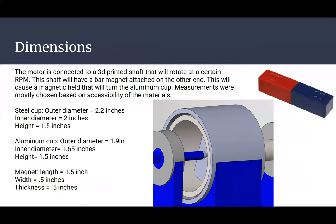As for the dimensions of our cups and magnets, our motor will connect to a 3D printed shaft that will rotate at a certain RPM. This shaft will have a bar magnet attached on the other end and the bar magnet will cause a magnetic field that will turn the aluminum cup. The measurements were mostly chosen based on the accessibility of the materials. For our steel cup, we have an outer diameter of 2.2 inches, an inner diameter of 2 inches, and a height of 1.5 inches. The aluminum cup, since it will go inside the steel cup, will need to be a little bit smaller. Our outer diameter is 1.9 inches, the inner is 1.65, and our height is 1.5 inches. And the magnet will go inside the aluminum cup, so the length of it will be shorter in order to fit into the aluminum cup. So it'll be 1.5 inches with a width of half an inch and a thickness of half an inch.